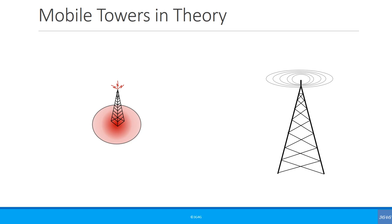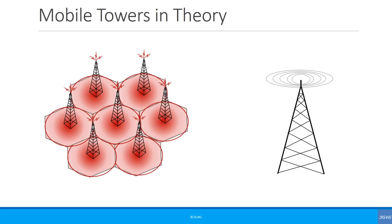In theory, when people study in their universities or in books, the mobile towers look something like this. You have a tower at the center of the cell creating a coverage area. In theory, if it's a single cell it's a circle, but when you have multiple cells the coverage areas are shown as hexagons. In practice it's much more complex.